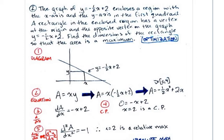Let's just get right into it. We're given the graph of y equals negative 1/2 x plus 2. It's obviously enclosing some region in the first quadrant. This is going to be key, in the first quadrant, so we only have to deal with the first quadrant.